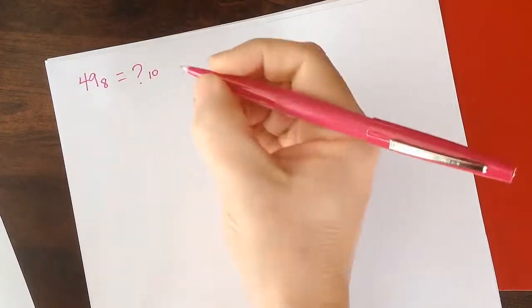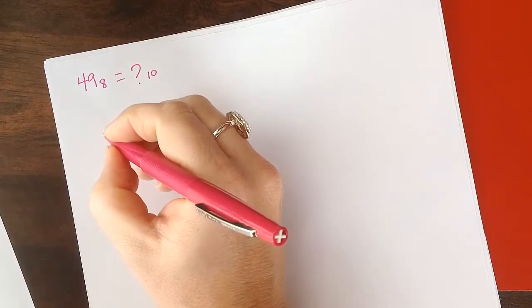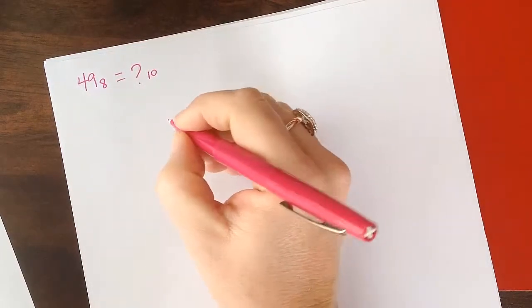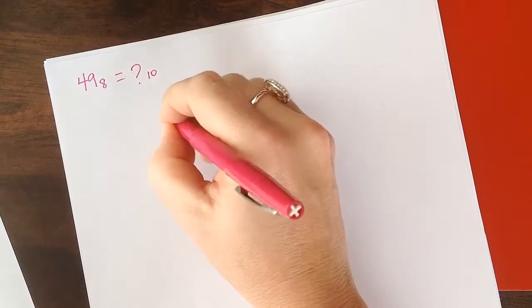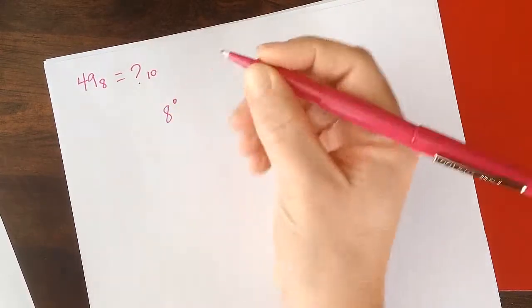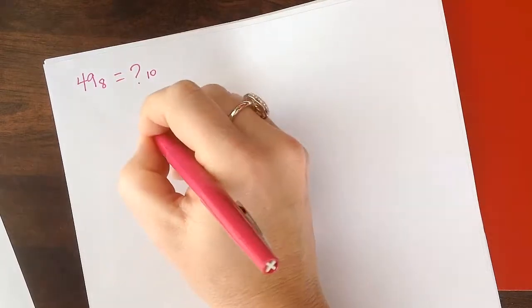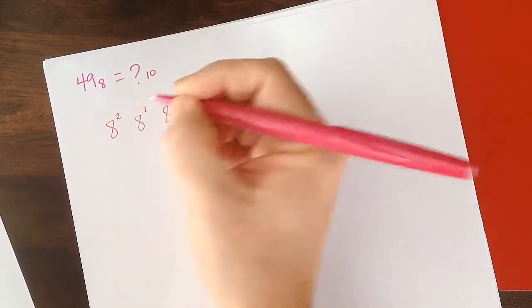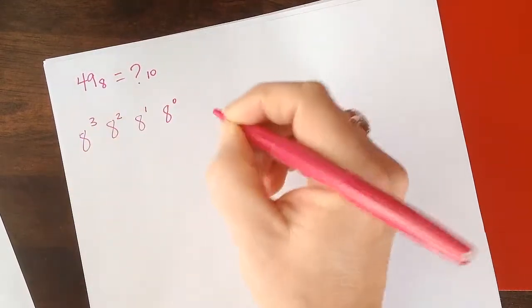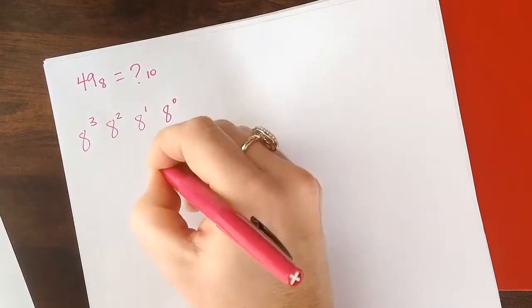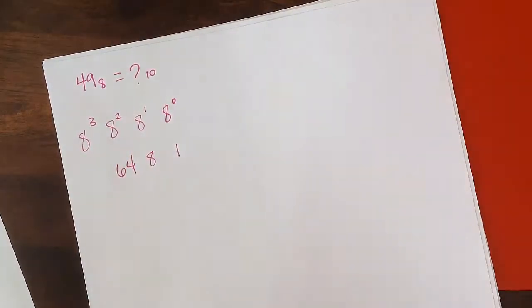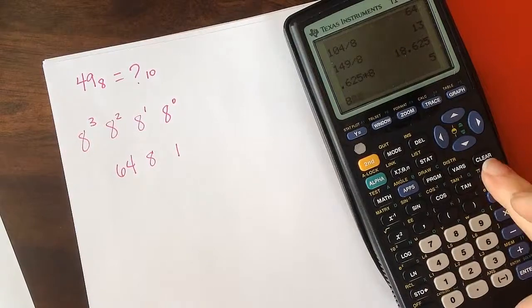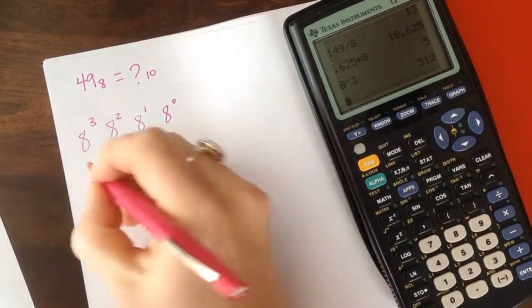When we look at that, we're going to use the weighted multiplication process. Remember that the way all number systems work is the first place is the base to the zero. This is the base to the first power, squared, cubed. So this will be the ones place, 8, 64. And let's see, what is 8 cubed? 512.